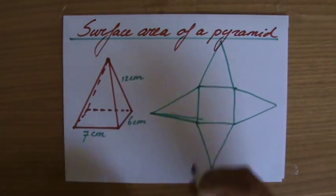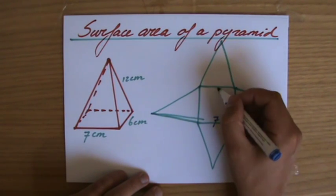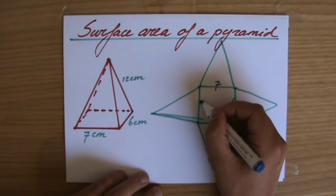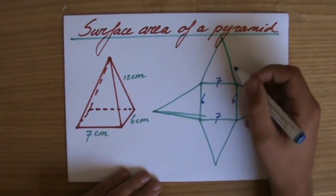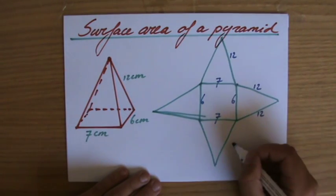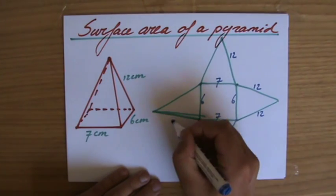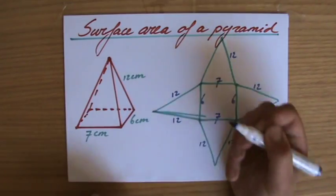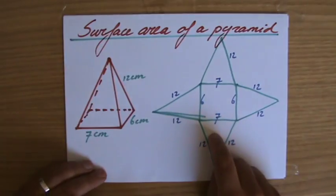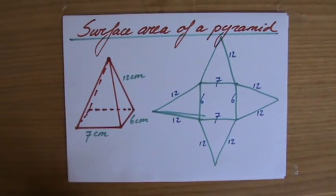I'm going to add the values there. This is 7. That one is 7. This is 6. And that one is 6. And the slant height is 12. So that is this length. That all is 12. Now I'm going to find the areas of my 1, 2, 3, 4, 5 faces, and then I'm going to add them together.